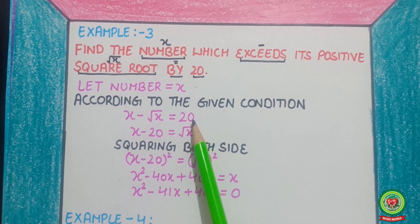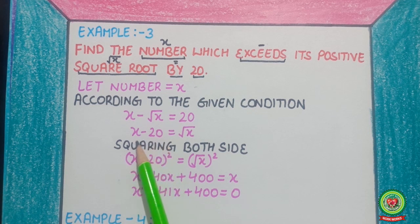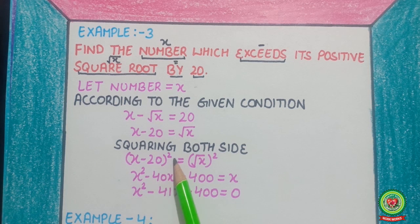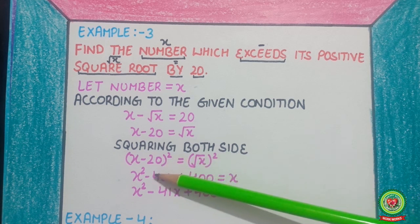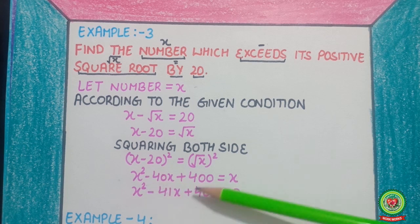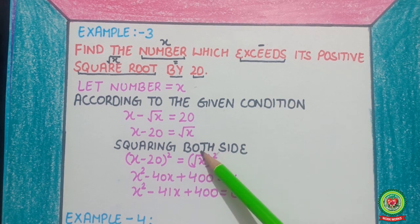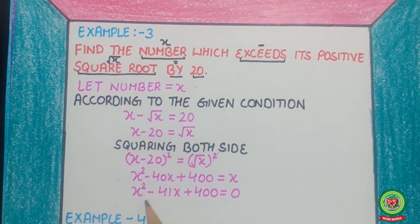Shifting gives the equation x minus 20 equals √x. Squaring both sides, (x minus 20) squared equals (√x) squared. Applying the (a minus b) whole square formula — a squared plus b squared minus 2ab — the square root cancels. After collecting terms, the equation is x squared minus 41x plus 400 equals 0.